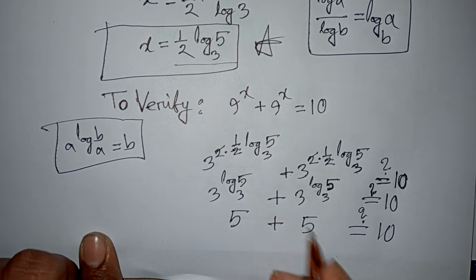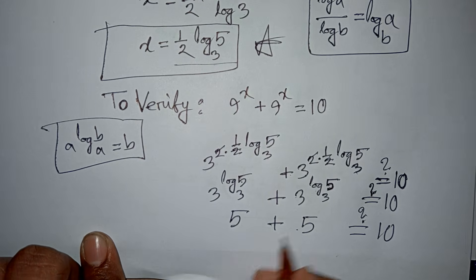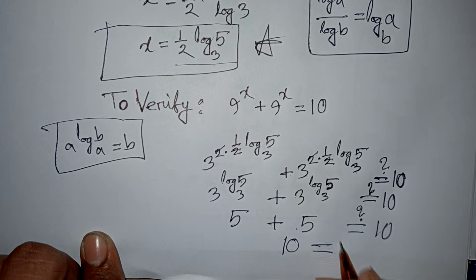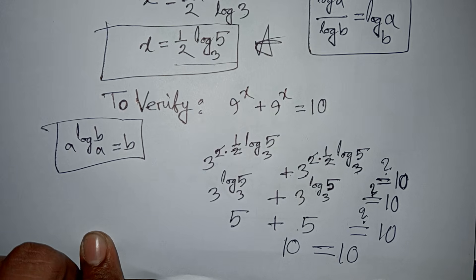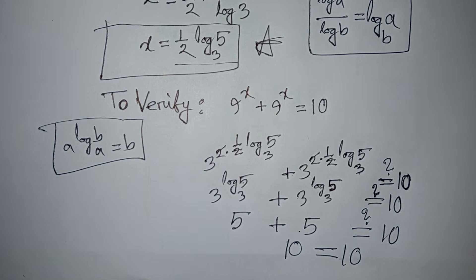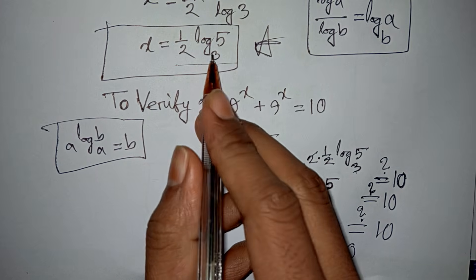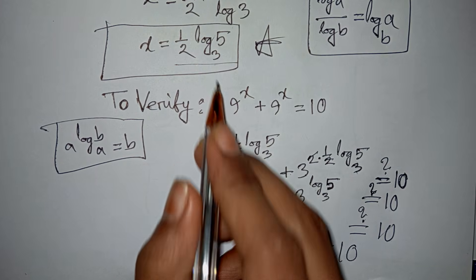Using the formula a to the power log b base a equals b, we get 5 plus 5 equals 10. Left side equals right side, so the answer is correct. The final answer is x equals one-half log 5 base 3.